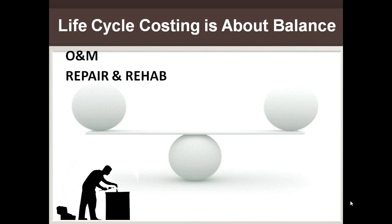Life cycle costing is really about balance — balancing the cost of operation, maintenance, repair, and rehab against replacement. If we do more O&M, repairs, and rehabilitation, we can forestall replacement. Vice versa, more frequent replacement means less O&M. However, replacement is generally a much more expensive activity. The more we lean toward replacement, the more it costs overall. We want to replace when we need to but avoid unnecessary replacements, keeping assets in service longer for a cheaper overall operation.